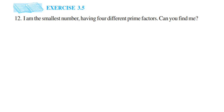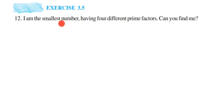Hey everyone, I'm doing exercise 3.5, 12th question. The chapter is 'Playing with Numbers.' The question is: I am the smallest number having four different prime factors — can you find me? So we need to find the smallest number that has four different prime factors.